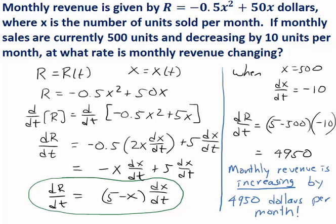So in this example, we see that the monthly revenue is increasing by four thousand nine hundred fifty dollars per month. Now this might seem a little bit bizarre because we just said that sales are decreasing by 10 units per month. So how could revenue be increasing?